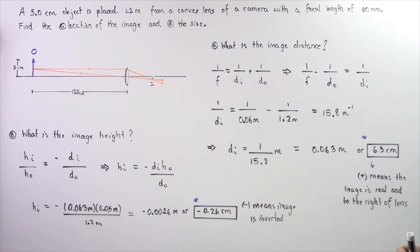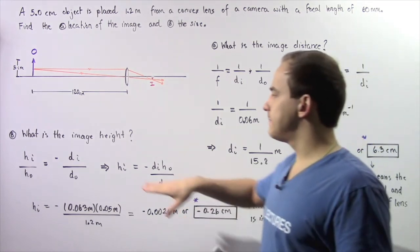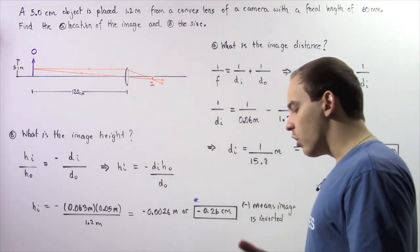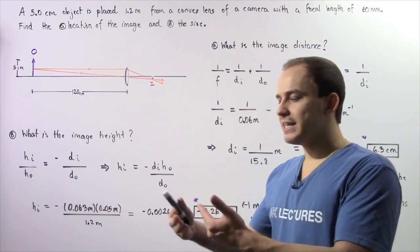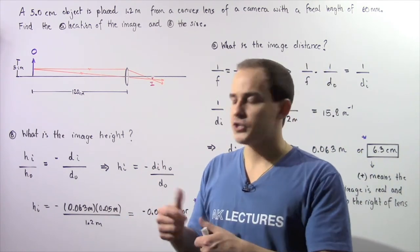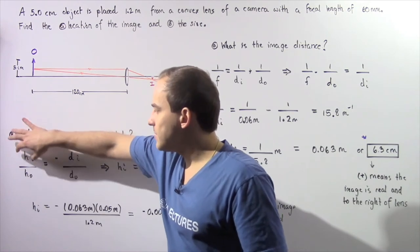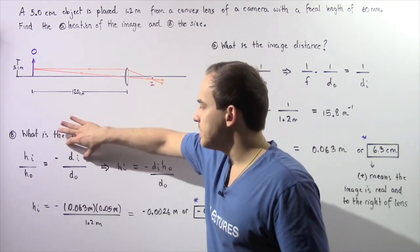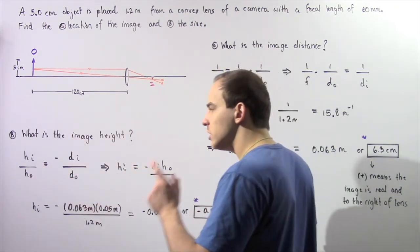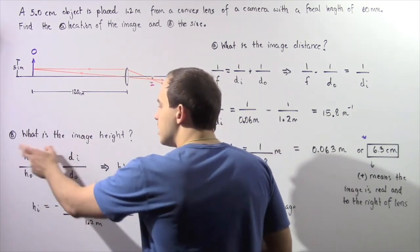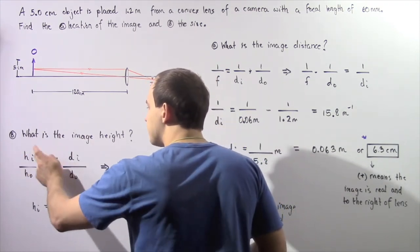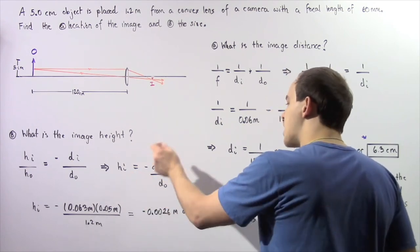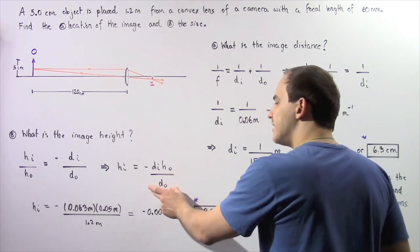Now let's examine part B. In part B, we essentially want to find the height of our image. Recalling the relationship between image height, object height, image distance, and object distance: the ratio of the image height to the object height is equal to the negative of the ratio of the image distance to the object distance. So rearranging to solve for Hi: Hi is equal to the negative of the product of the image distance and the object height divided by the object distance.